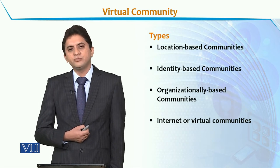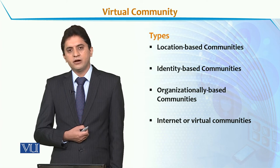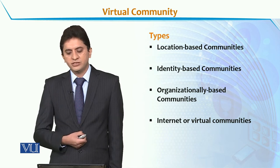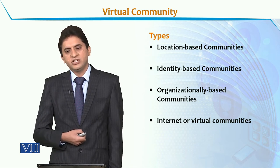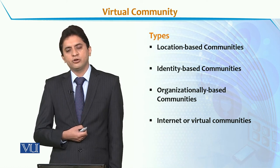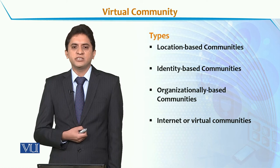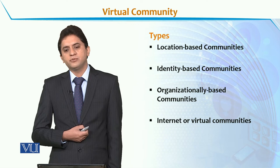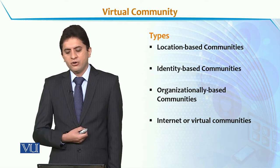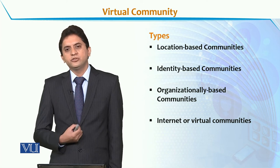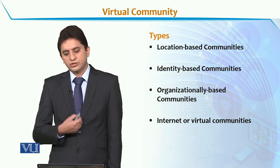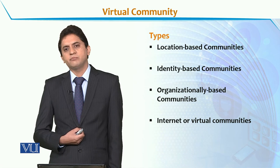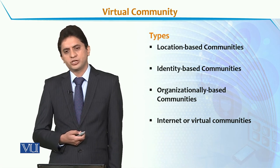If we make types of community, nowadays we can identify different types. For example: location-based communities, identity-based communities, organizationally based communities, or internet or virtual communities. Location-based communities like a specific town ki ho sakti hai. Identity-based community jaise aap ki koi belief system pe koi community ho sakti hai. Organizationally based community jaise ke kisi university ki ek alumni organization ho sakti hai. Or internet ke upar, interest ki basis pe bhi aap ki virtual communities ho sakti hain.